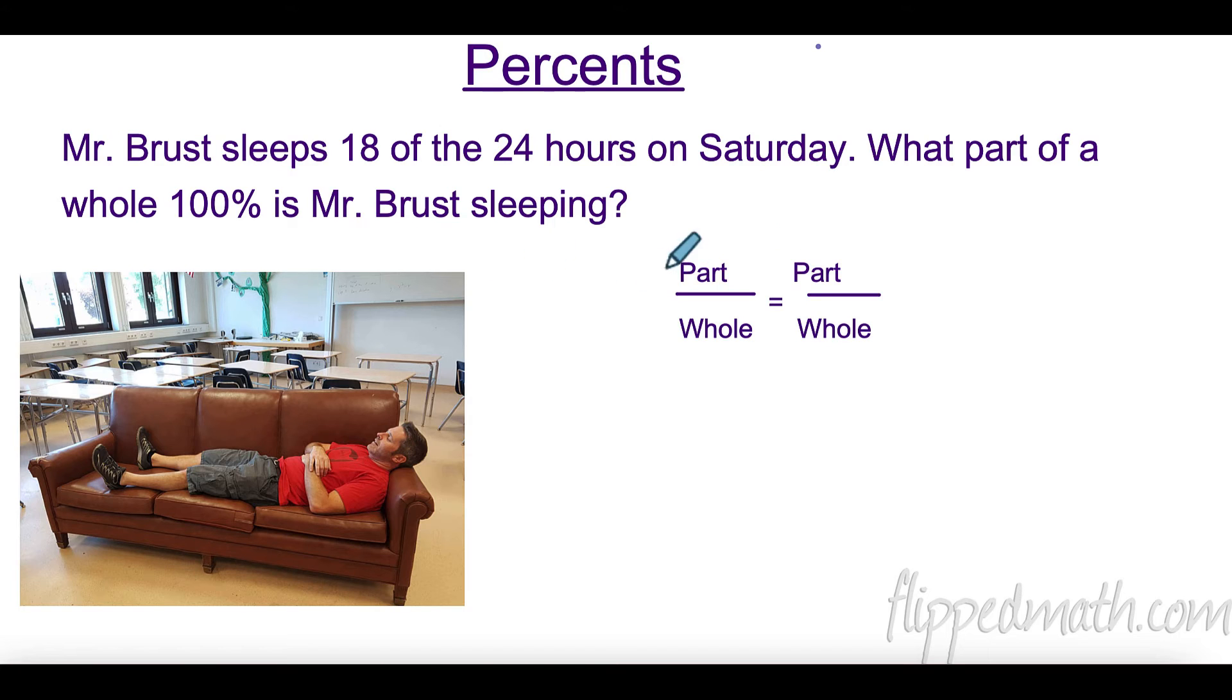So I want to set up a proportion. Remember, when we have a proportion, things need to relate to each other. On this side I'm going to put everything that is a percent. We know a whole is 100%. On this side I'll have everything that deals with hours. A whole percent is 100 - that's very important to understand. Percent means per 100. Do we know what part of the hundred? No, so that would be our variable X. Over here, the whole is 24 hours, and the part that he slept is 18.